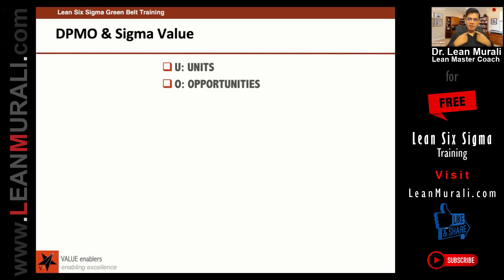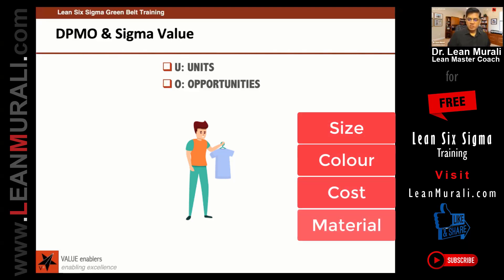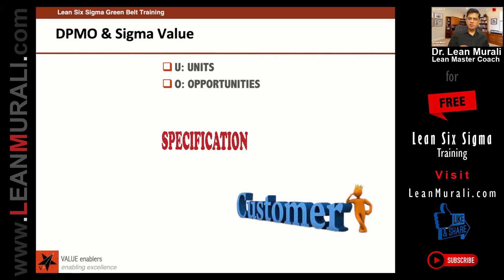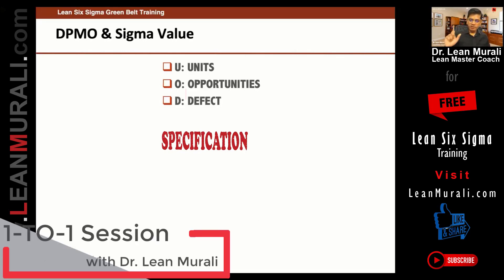Opportunity means: if you're going to buy a shirt, what will you look for? The size, the color, the cost, the material, the softness. So opportunity means what are the specifications that a customer is looking for. Those are the opportunities. If something is against that specification, it is called a defect.